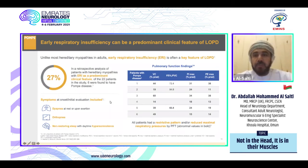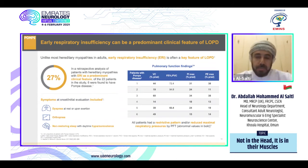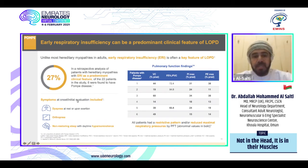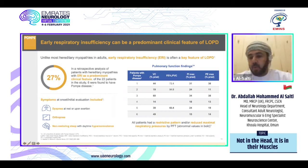Early respiratory insufficiency can be a predominant clinical feature of Pompe disease and is a key feature of late onset Pompe disease that should alert all neurologists and physicians. In a retrospective analysis of patients with hereditary myopathy presenting predominantly with early respiratory insufficiency, 6 of 22 patients — around 27% — were found to have Pompe disease. Symptoms at onset included dyspnea, orthopnea, non-restorative sleep, or daytime hypersomnolence. All patients had a restrictive pattern or reduced maximal respiratory pressures on pulmonary function testing.